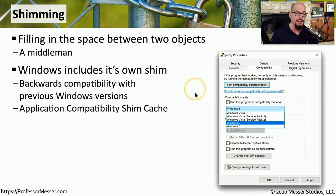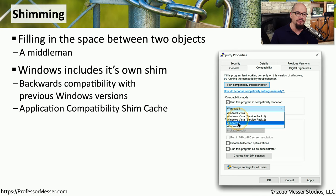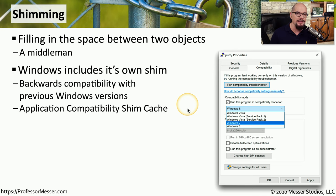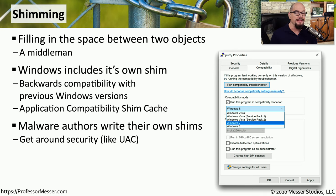There are also shims built into your operating system. Windows has one called Windows Compatibility Mode, which lets you run an application as if it were running in a different, older version of Windows. This uses an application compatibility shim cache to transfer information between the current OS and the emulated previous one. Malware authors have found they can exploit this shimmed area to place malware on a computer and bypass security features like User Account Control in Windows.